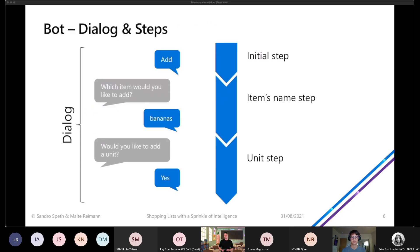So how does a bot look like? A chatbot usually consists of dialogues. A dialogue is a back and forth of messages. We have here an example where we just write 'add' and then the bot will ask us which item we want to add. This back and forth is called a dialogue, and each dialogue consists of several steps.